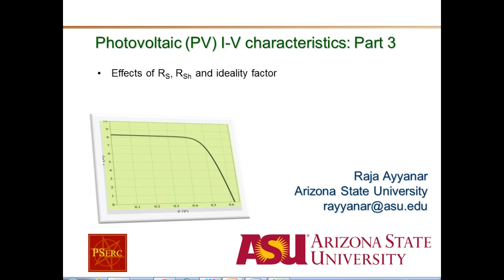In part 2 on PV IV characteristics, we looked at the effect of the environmental factors, mainly the solar irradiance and the temperature on the IV characteristics of the PV cell. Now this is part 3 where we look at the effect of the series and the shunt resistance, as well as the effect of the ideality factor on the IV characteristics.